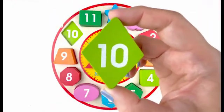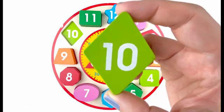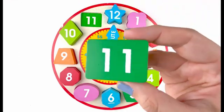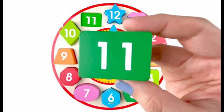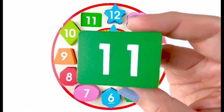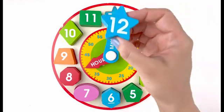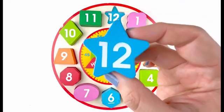Number ten. This number ten is on a green diamond. Number eleven. This number eleven is on a dark green rectangle. And finally, number twelve. This number twelve is on a blue star.